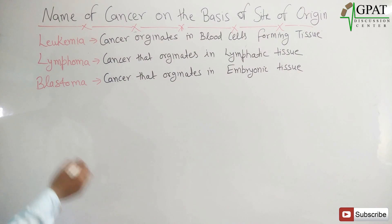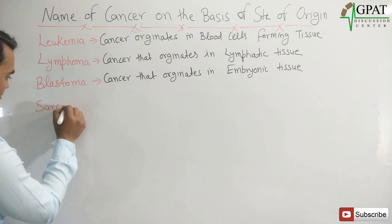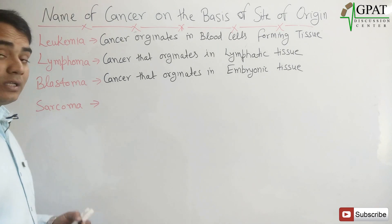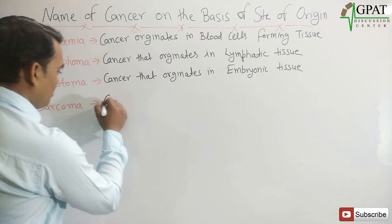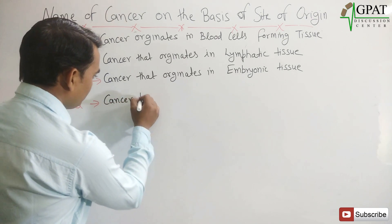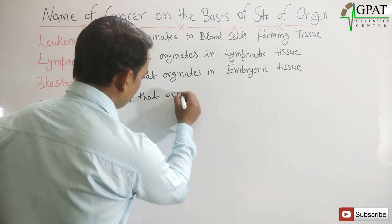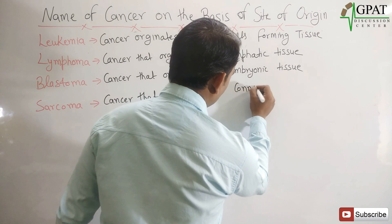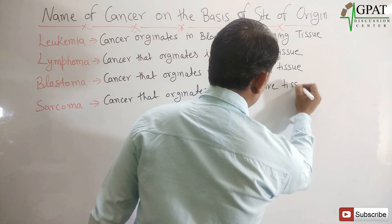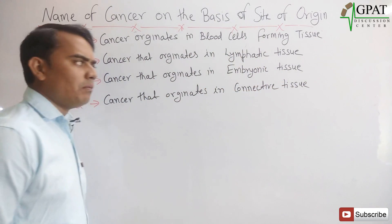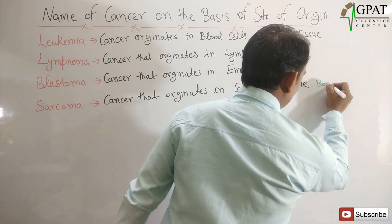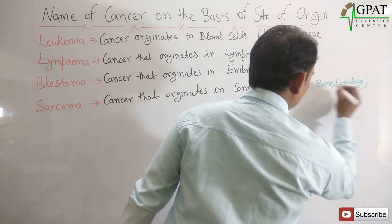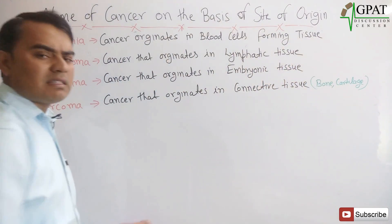Next, sarcoma. Sarcoma is the cancer that originates in connective tissue. Examples of connective tissue include bone and cartilage.